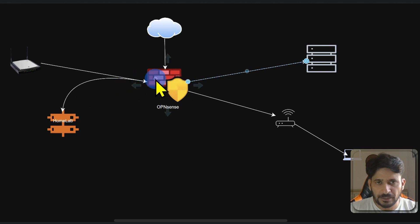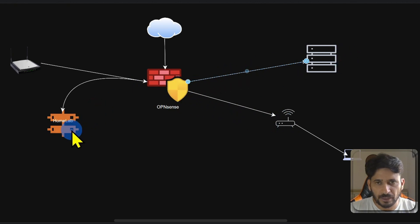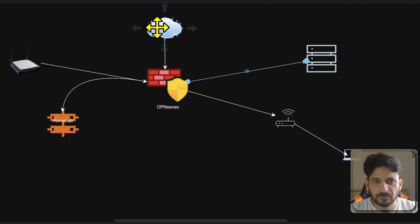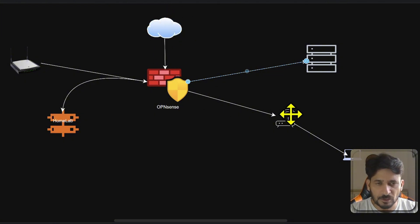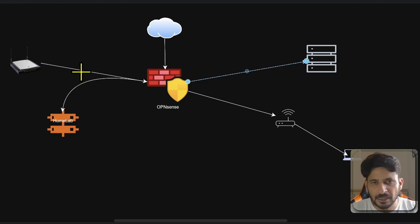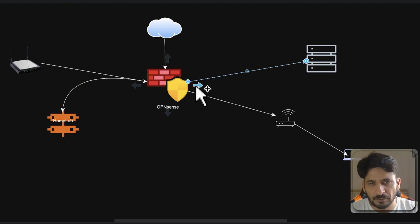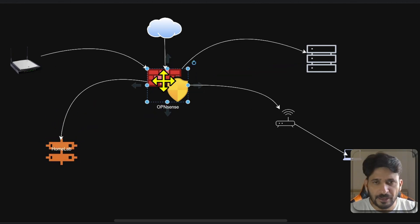If you remember, we had OPNsense and it has multiple network interfaces. I have the Wi-Fi connected on one port, the servers connected on one port, the home lab connected on one port, the guest network on one port, and the internet connected on one port. Internet traffic is coming from here and going out here. We can also create VLANs here and create firewall rules.